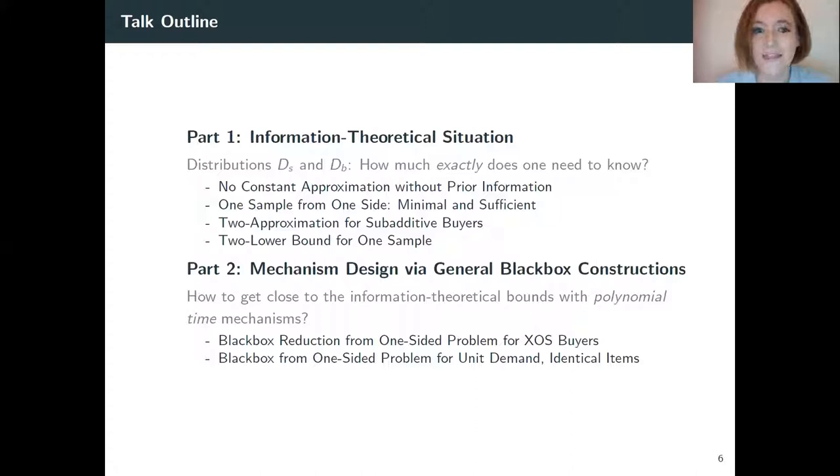Accordingly, the outline of the talk does just that. We will have the information theoretical situation in part one, where we ask how much exactly we need to know about the distributions and present a number of results. And then part two, where we show how to generally design mechanisms with black box constructions.